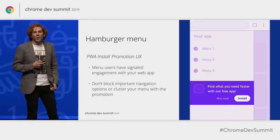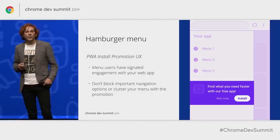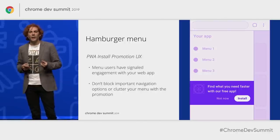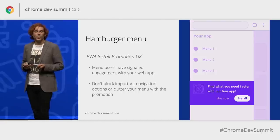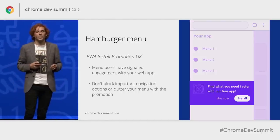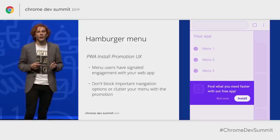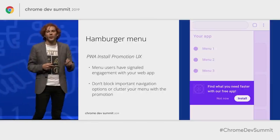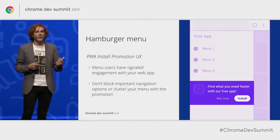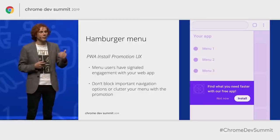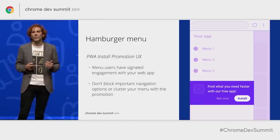Here's an example of adding an install prompt to the hamburger menu. The great thing about using the menu is that there's already a strong signal the user is interested in what you're offering by clicking on it. You don't want to block access to any important functionality, and make sure it doesn't overlay anything or clutter up the menu design or take precedence over other actions the user might want to take.